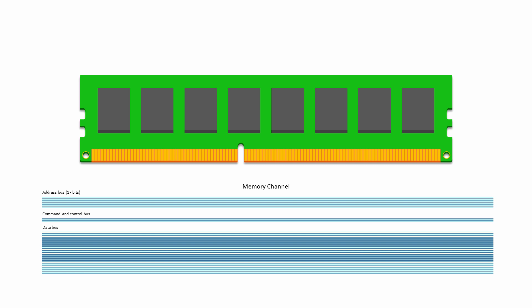Typically, 17 lines carry the memory address. These lines are used to deliver a row address and a column address separately, meaning we can have larger memory addresses than 17 bits alone would allow. Six lines of the memory channel carry command and control signals, and 64 lines carry the data itself. If the data bus supports error correction, it may well be 72 bits wide rather than 64.